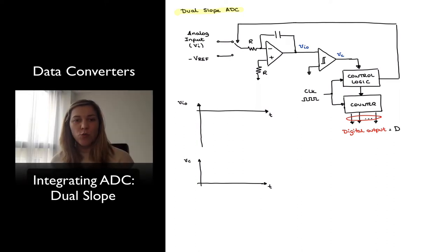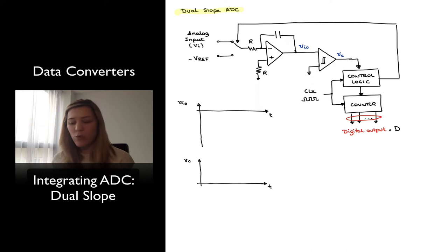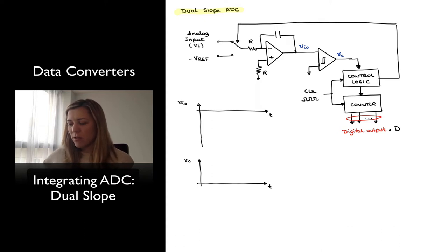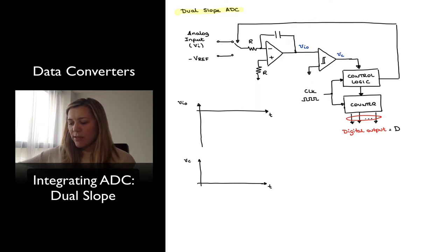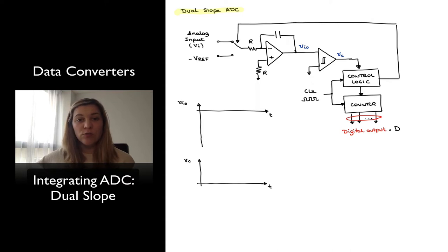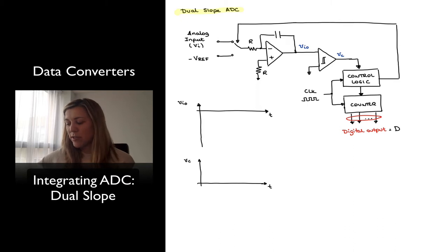Let's take a look at the dual-slope ADC. From the block diagram, it is similar in structure to a single-slope ADC in that it contains an integrator. The input to the integrator is switched between the analog input and a reference voltage, labeled negative Vref — it must be a negative reference if the input is positive, and vice versa. The output of the integrator, labeled Viout, is fed into a comparator with the other input tied to zero, forming a zero-crossing detector. The comparator output Vc is fed into control logic, which controls a digital counter and resets the switch that selects between the analog input and the reference voltage.